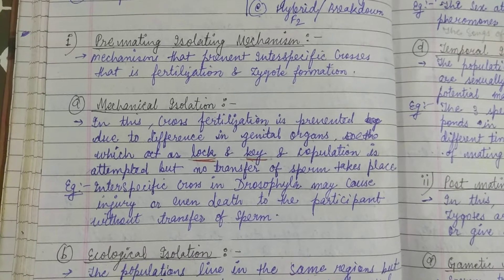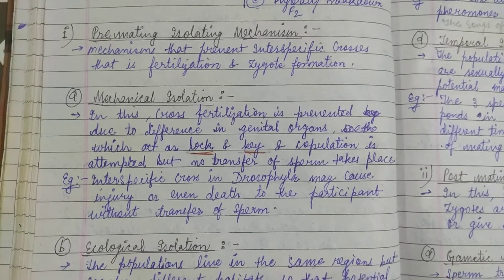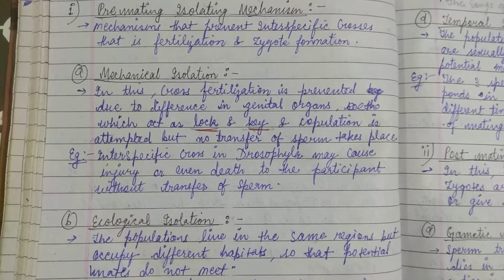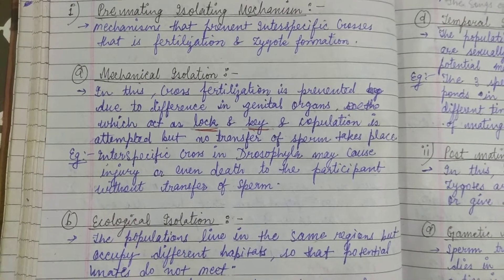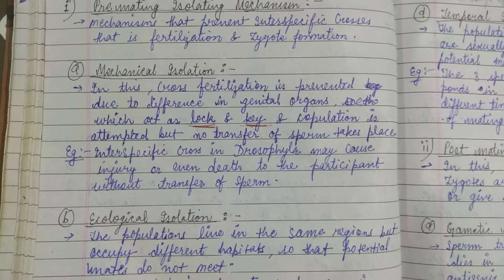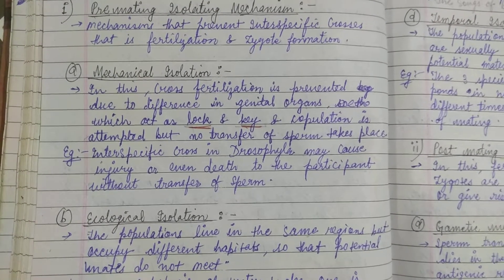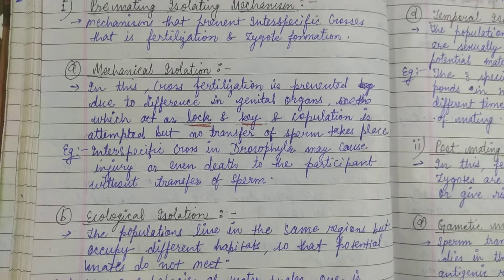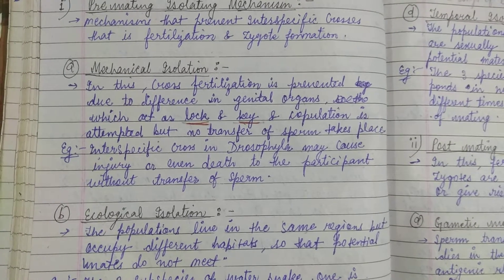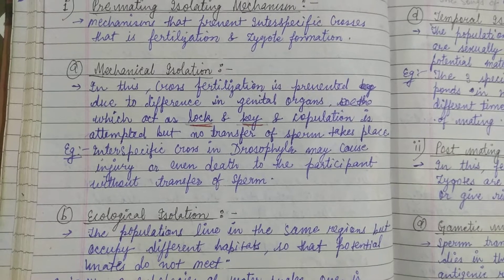The mechanism prevents inter-specific crosses and zygote formation. In mechanical isolation, the reproductive organs are different so mating does not occur. For example, inter-specific crosses in Drosophila may cause injury or even death to the participant without transfer of sperm.